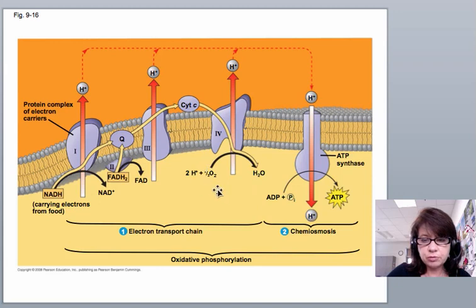This is the reason we need to breathe oxygen. Oxygen is called the final electron acceptor, and it is going to get reduced to water. Water just will diffuse through the cell.